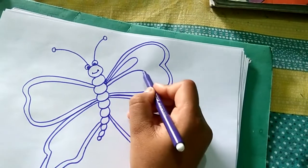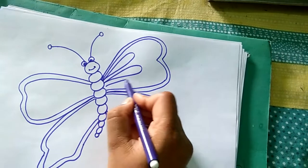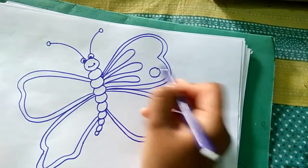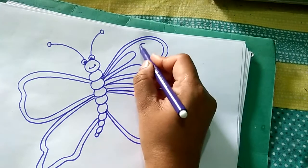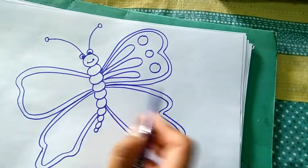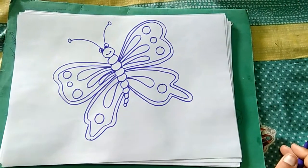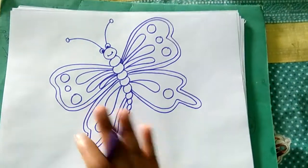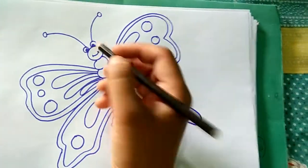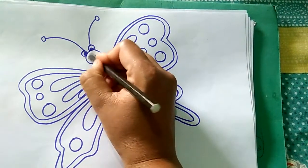We will draw a circle here, we will draw a circle here. Now same process here, we will repeat like this, class. Okay, so now we will color it. First, we will color here.